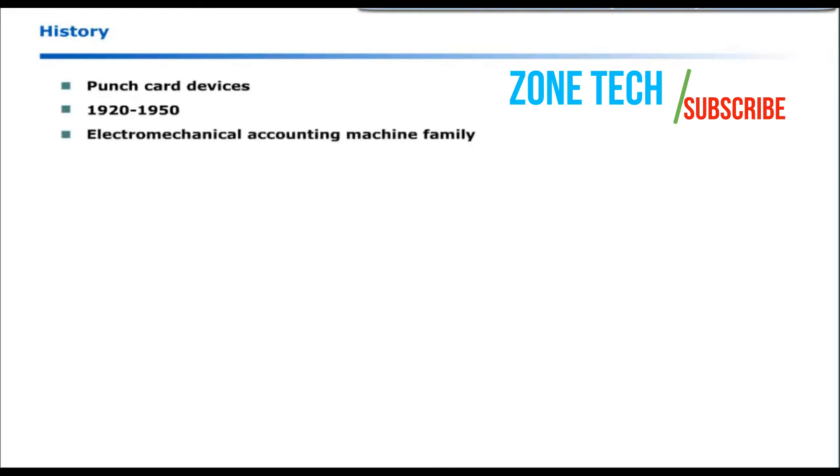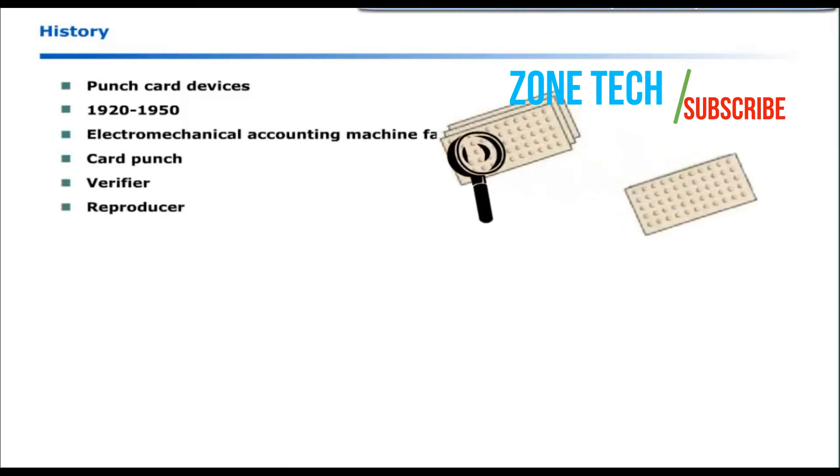The electromechanical accounting machine family included card punch, verifier, reproducer, summary punch, interpreter, sorter, collater and accounting machines.